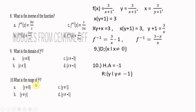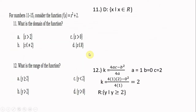For the range of the inverse function: since the numerator and denominator of f⁻¹(x) = (3 − x)/x both have degree one (equal degrees), the horizontal asymptote is −1/1 = −1. Therefore the range is {y | y ≠ −1}.